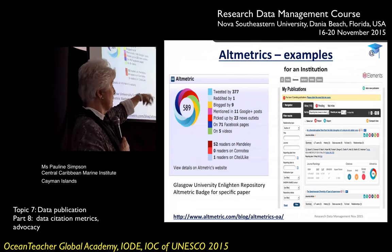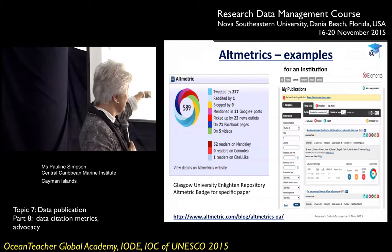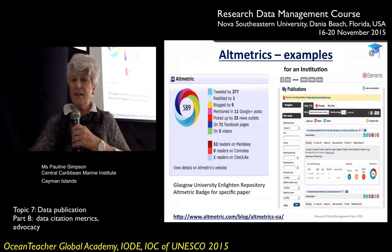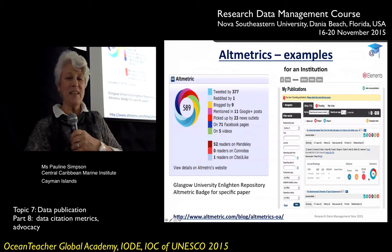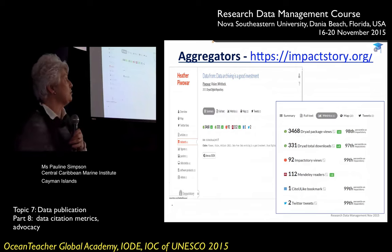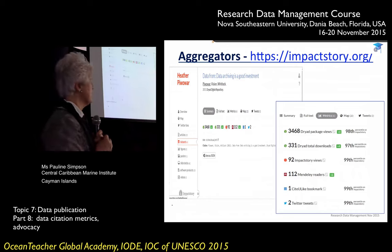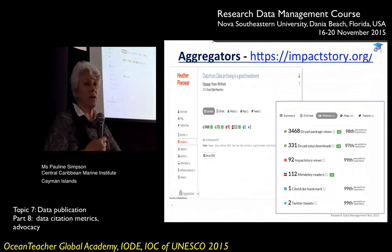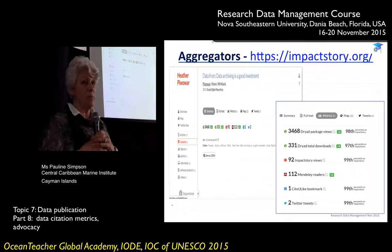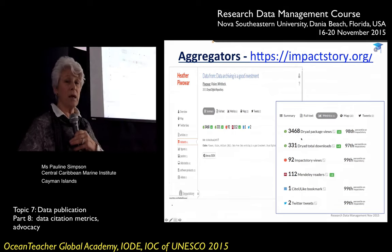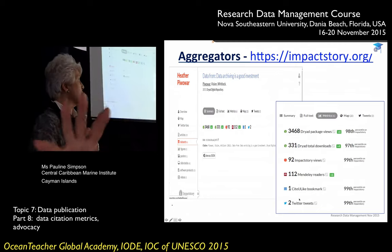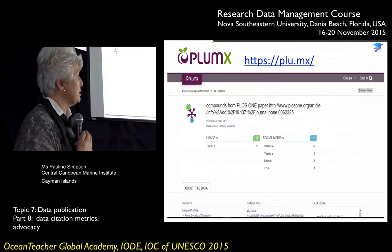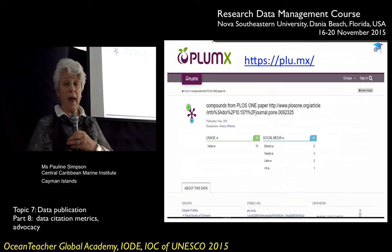Altmetrics also does metrics for institutions, and you can see alongside Scopus and Web of Science there's an altmetric badge displayed. There are also aggregators — brand new ones. Impact Story is funded by the National Science Foundation and uses altmetrics. For example, data from an article published in Nature can show you how many views, downloads, readers, and likes. There's another product and aggregator offering social media metrics as well.